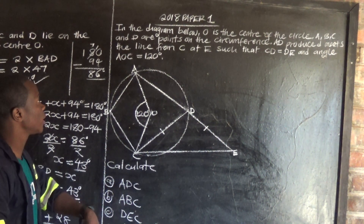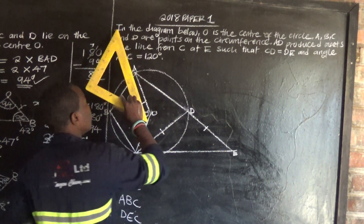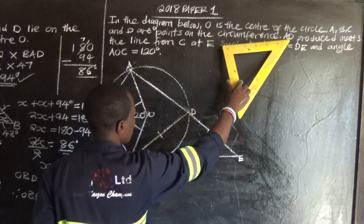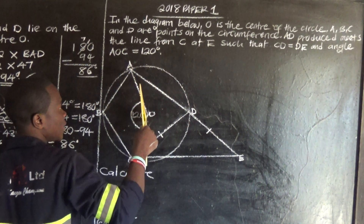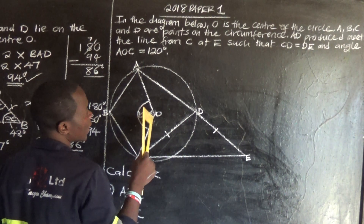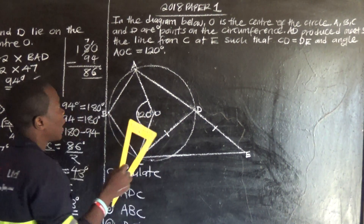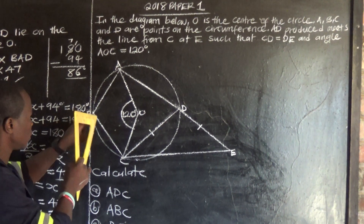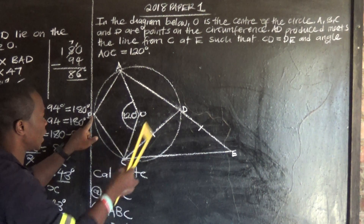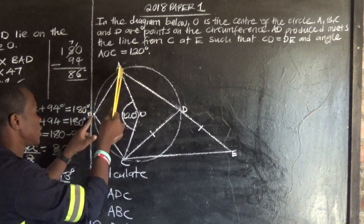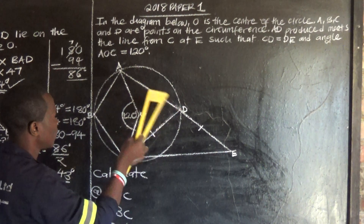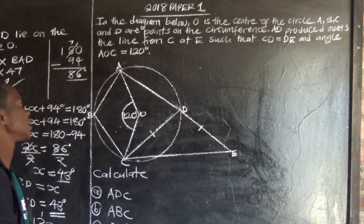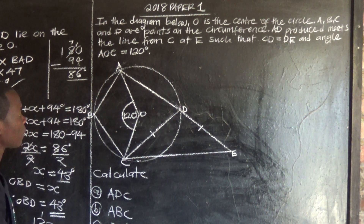Now let us look at the 2018 Paper 1. It's saying in the diagram below, O is the center of the circle. In this circle where O is the center, the points A, B, C and D are forming what we call a cyclic quadrilateral, because these are four points on the circumference of the circle.